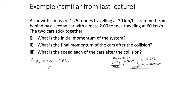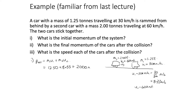We have car 1 with mass M1 equals 1.25 tonnes and initial velocity U1 equals 30 km/h equals 8.33 m/s, and car 2 with mass M2 equals 2 tonnes and U2 equals 60 km/h equals 16.67 m/s. The initial net momentum is M1U1 plus M2U2 equals 1250 times 8.33 plus 2000 times 16.67, which equals 43,750 Newton seconds, or approximately 44 kilonewton seconds.